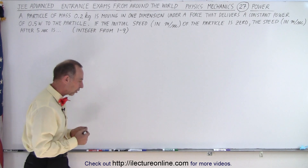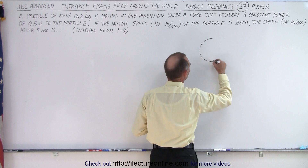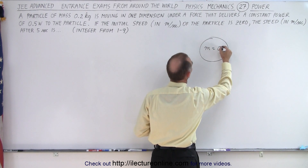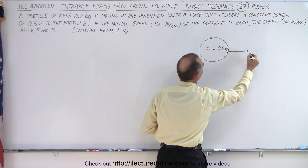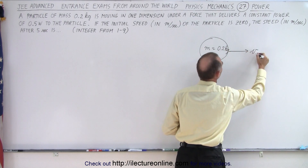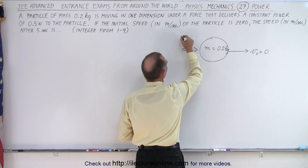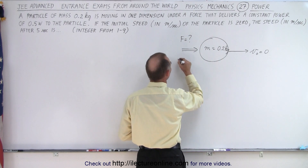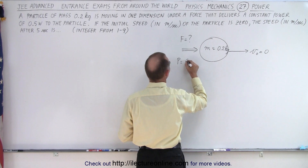Let's draw a quick schematic of what that looks like. I have a particle where the mass is equal to 0.2 kilograms, V initial equals 0, and we're applying a force. We don't know the quantity of the force, but we know that the power delivered to the particle is equal to 0.5 watts.